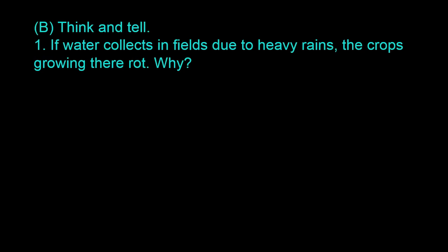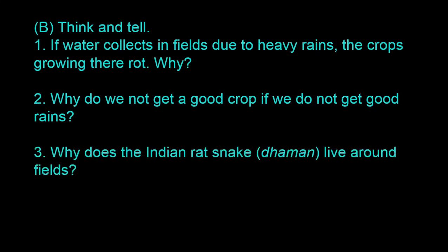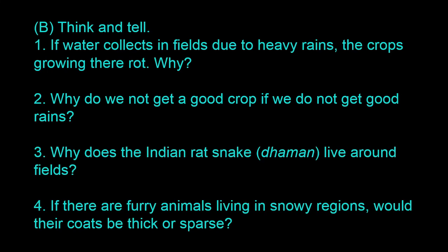Question Number B — Think and Tell. 1. If water collects in fields due to heavy rains, the crops growing there rot. Why? 2. Why do we not get a good crop if we do not get good rains? 3. Why does the Indian rat snake, damon, live around fields? 4. If there are furry animals living in snowy regions, would their coats be thick or sparse? Let's see the answers for these questions.